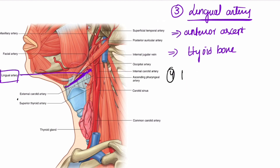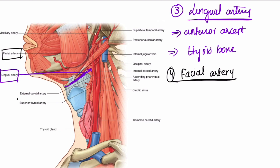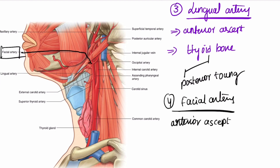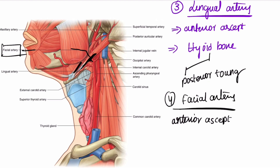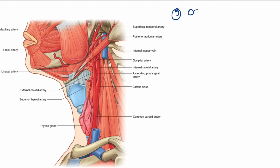Next is the facial artery, which also arises from the anterior aspect. It moves deep to the stylohyoid muscle, deep to the posterior belly of the digastric muscle, and also the mandibular gland and the mandible. After that it enters the face. The facial artery is the major supply for the face.